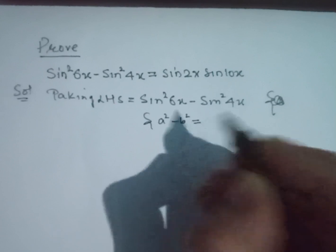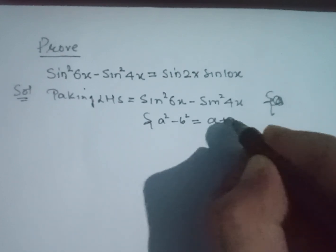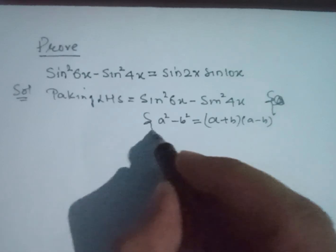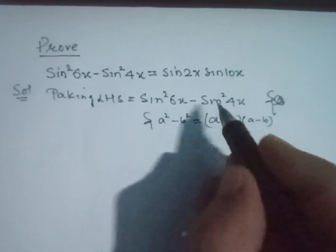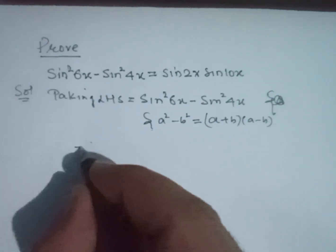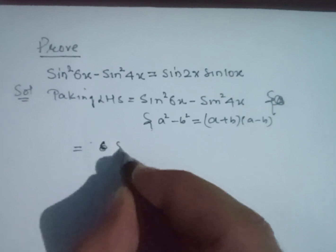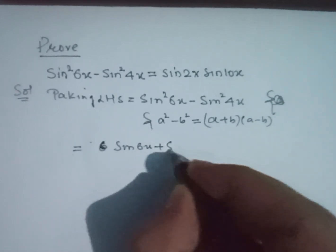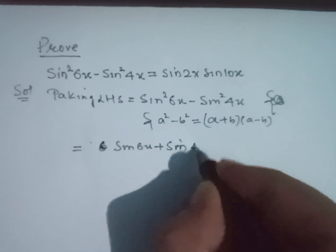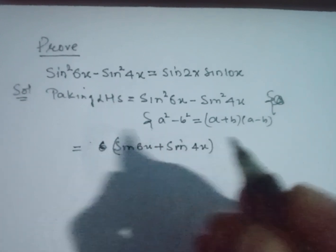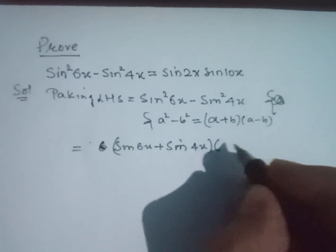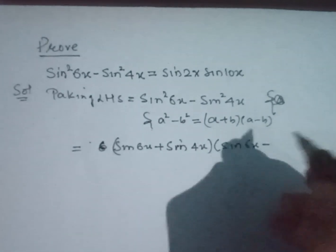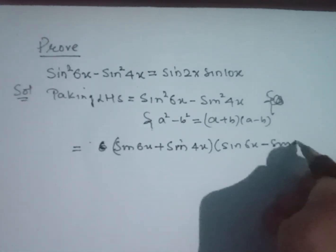minus b² equals (a + b)(a - b). So according to this identity, the next step will be (sin 6x + sin 4x)(sin 6x - sin 4x).